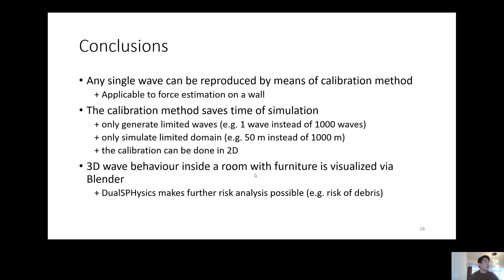Second, the calibration method saves a lot of time of simulation. Because this method makes the simulation only one wave instead of 1,000 waves. And the domain size is also very small, 50 meters in our case instead of 1,000 meters. And we can do this calibration in 2D instead of 3D.